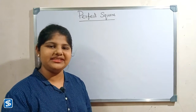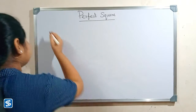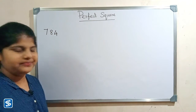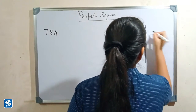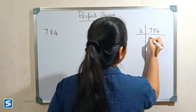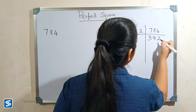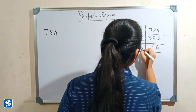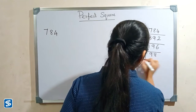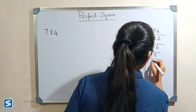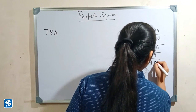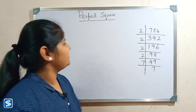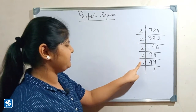Now we will see how to check whether the given numbers are perfect squares or not. For example, we can take 784. We have to find the prime factors of the given number. The factors are 2 × 2 × 2 × 2 × 7 × 7.